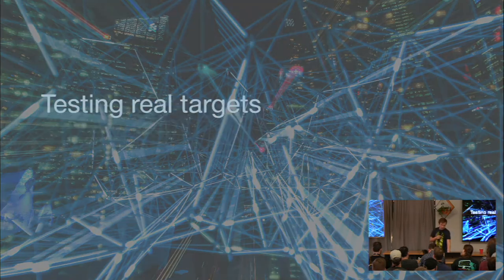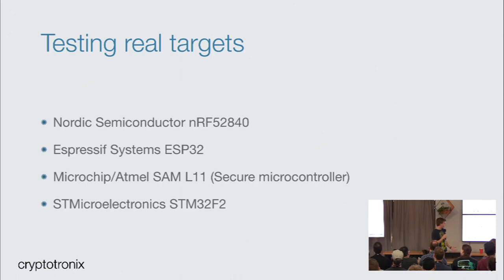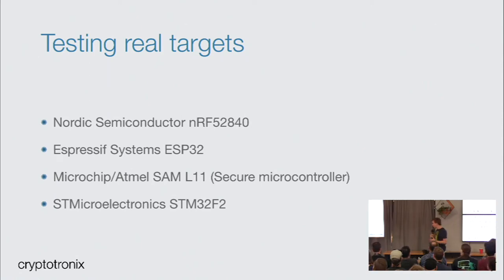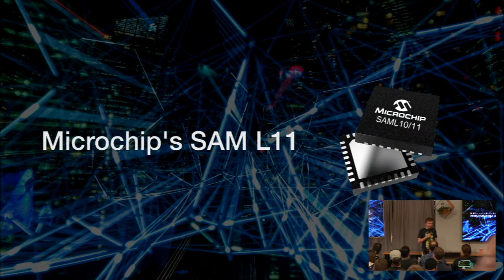We looked at processors found in common IoT devices — our goal was to evaluate modern processors people are using in new designs with new security features. The chips we evaluated were the nRF52840 Bluetooth chip found in many wearables, the ESP32 found in almost every second Chinese IoT device, the SAML11 which is a secure microcontroller, and the STM32F2. Our goal was to configure these in real-world conditions and test the chips in situ.